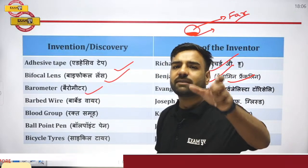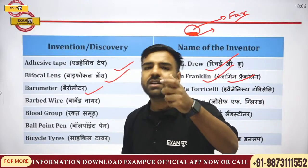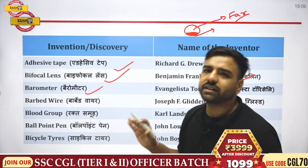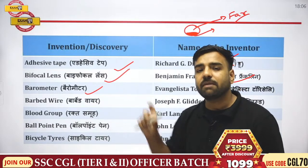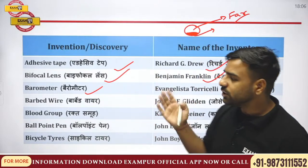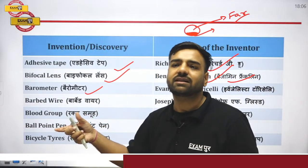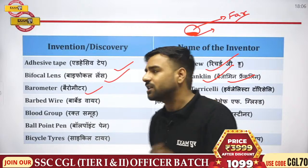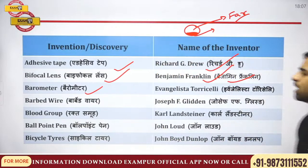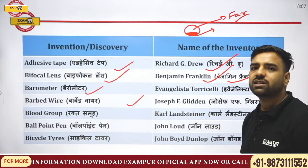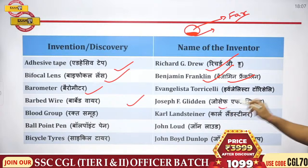Atmospheric pressure is measured by the barometer, discovered by Torricelli. The unit has been derived from his name itself — Torricelli. Next, barbed wire was discovered by Joseph F. Glidden.